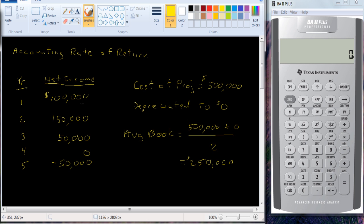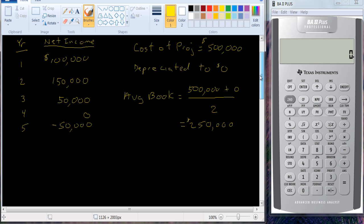Average net income, all we have to do is add up these numbers, divide by five, so let's do that. Let's see what we have here, average, we have 100,000 in the first year, plus 150,000 in the second year.